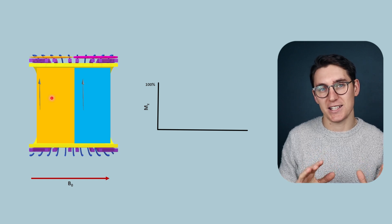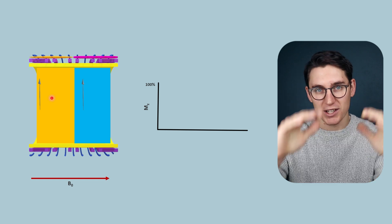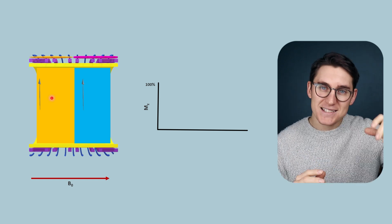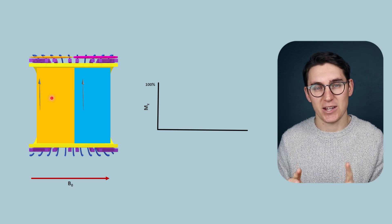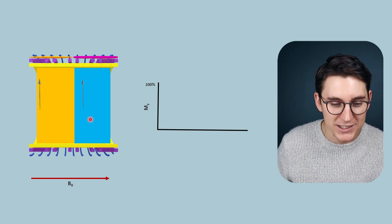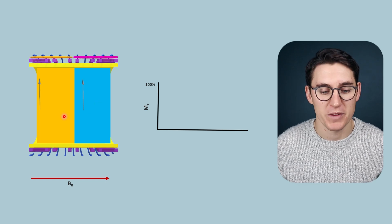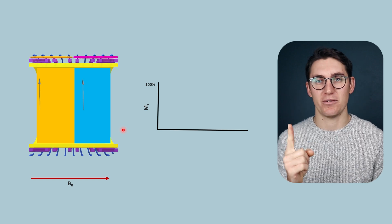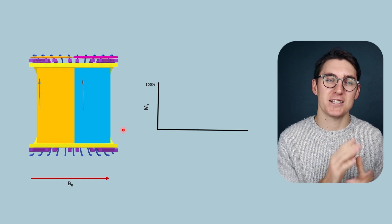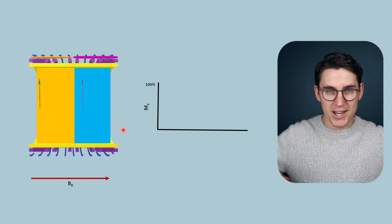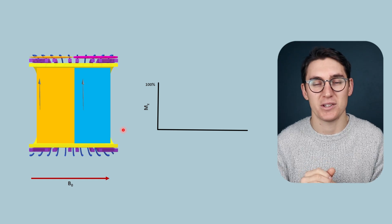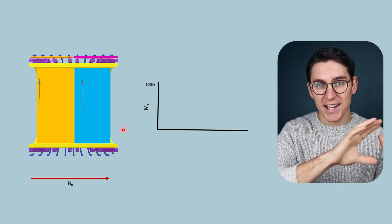We've looked at T2 relaxation where spins de-phase and we get loss of transverse magnetization. Now we're going to look at how longitudinal magnetization is regained. As that B1 radiofrequency pulse is turned off, the spins interact with the lattice — the non-spin components that cause spins to realign with the B0 field. The rate at which spins realign is dependent on tissue type. Think of people in a room with chairs as obstacles: the chairs aren't spinning, but people can trip over them — interacting with the lattice — and falling would cause the basketball to tip into the longitudinal plane.